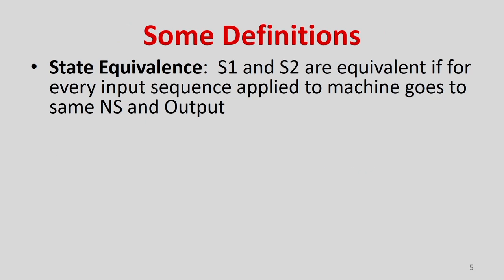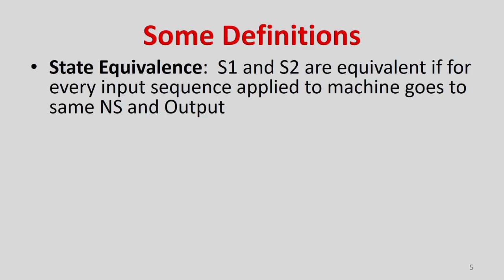Let us look at some definitions. One definition is state equivalence. We are looking at state optimization from an example point of view, not from the proof point of view — proofs are given in theory of computation courses. Two states S1 and S2 are equivalent if for every input sequence applied to the machine, it goes to the same next state and produces the same output.